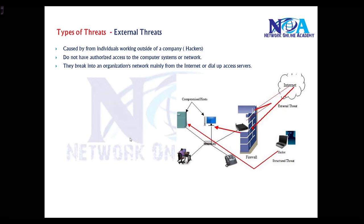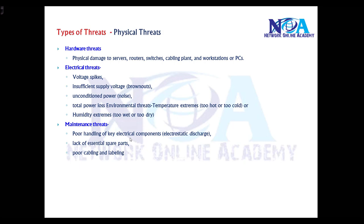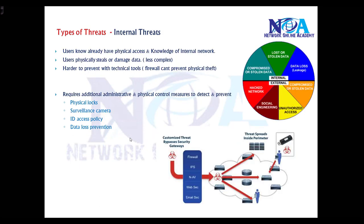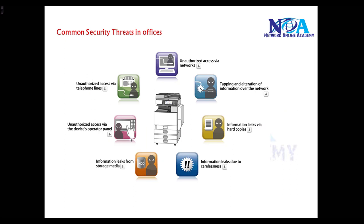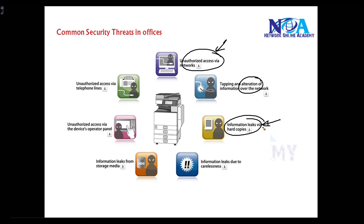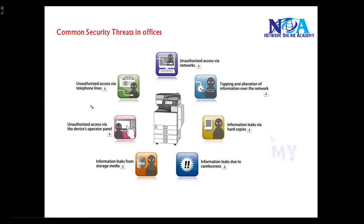These are the three common threats: physical, internal, and external. The most common threats seen in offices include unauthorized users trying to access the network, altering or modifying information, tapping information, leaking data through hard copies or storage media, or causing damage through carelessness.